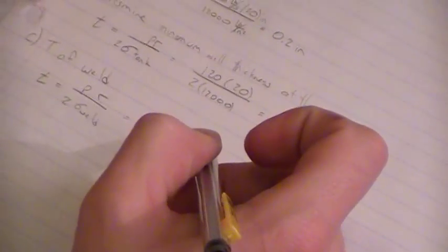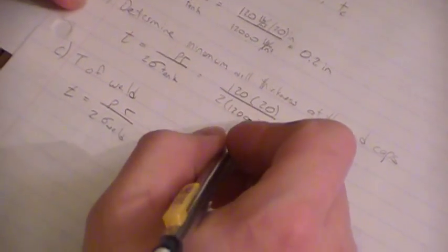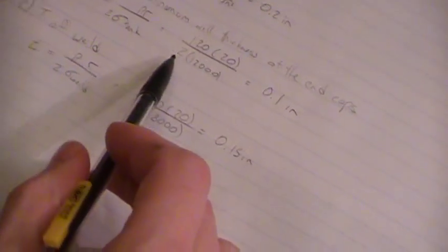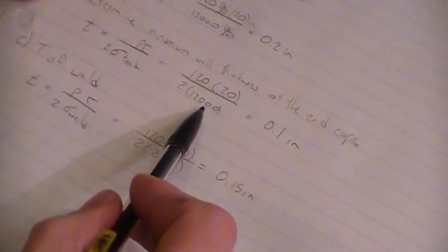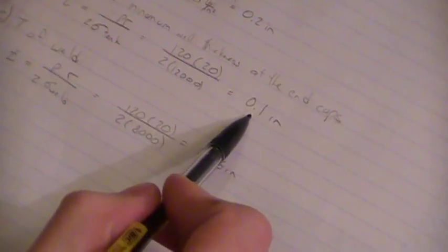That problem also is pretty simple. I just took 120 times 20, and divided it by 2 times 12,000 psi, and I got 0.1 inches for the thickness of the end caps.